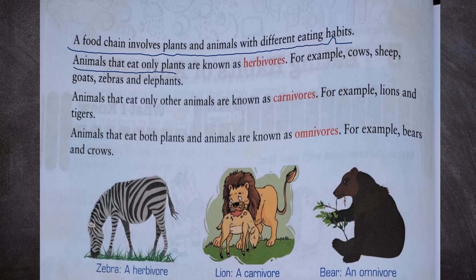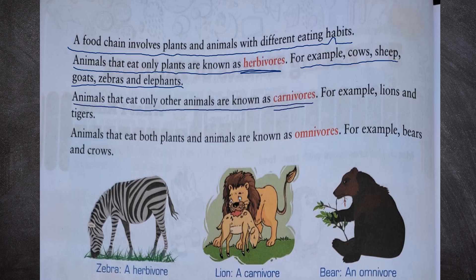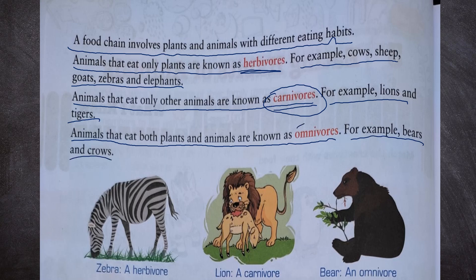Animals that eat only plants are known as herbivores. For example, cows, sheep, goats, zebras and elephants are herbivores. Animals that eat only other animals are known as carnivores — for example, lions and tigers. Animals that eat both plants and animals are known as omnivores — for example, bears and crows. So omnivores eat both plants as well as animals.